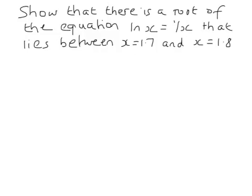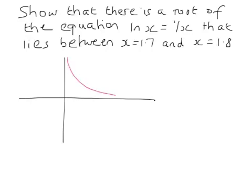This is the final C3 topic — a nice easy topic to finish with. You do need to be careful about what you're writing down in the conclusion of these questions, as it's easy to throw marks away in exams if you fail to write out the correct words. Let's think about this equation: ln(x) equals 1 over x. Let's draw a graph to show how this works. The graph of y equals 1 over x looks a little bit like this.